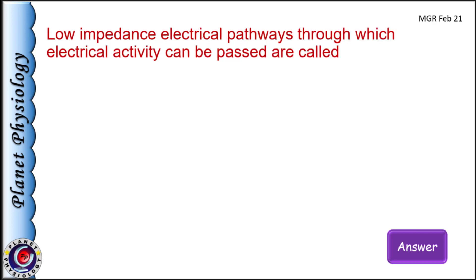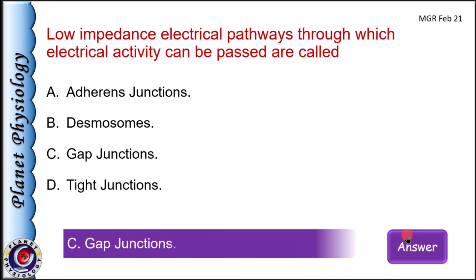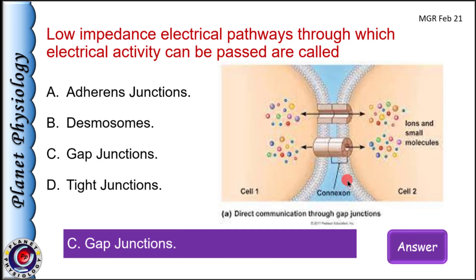Low impedance electrical pathways through which electrical activity can be passed are called: A) adherence junction, B) desmosomes, C) gap junctions, and D) tight junctions. The correct answer is gap junctions. These junctions are abundant in cardiac muscle and also found in single-unit smooth muscles. They allow passage of ions and small molecules, helping rapid conduction of impulses from one cell to the next, making tissues act as syncytium.